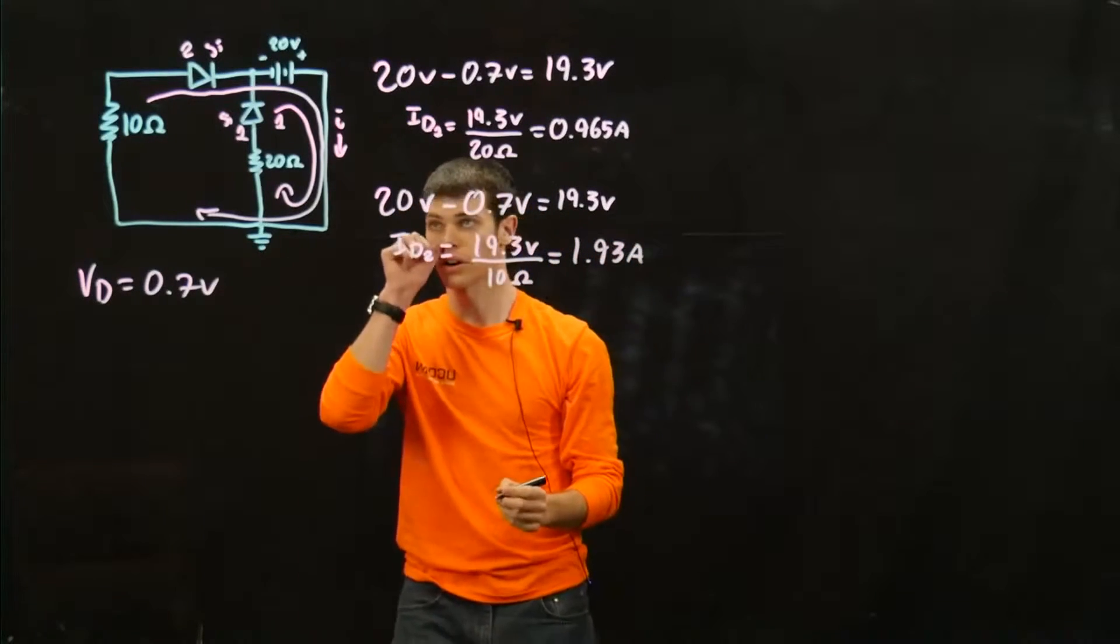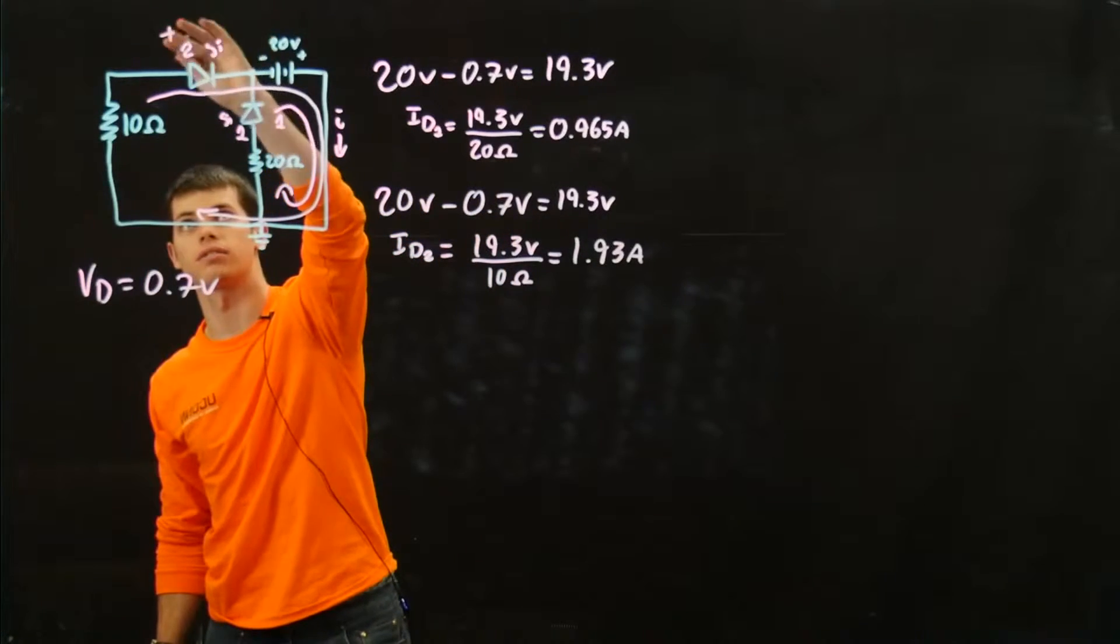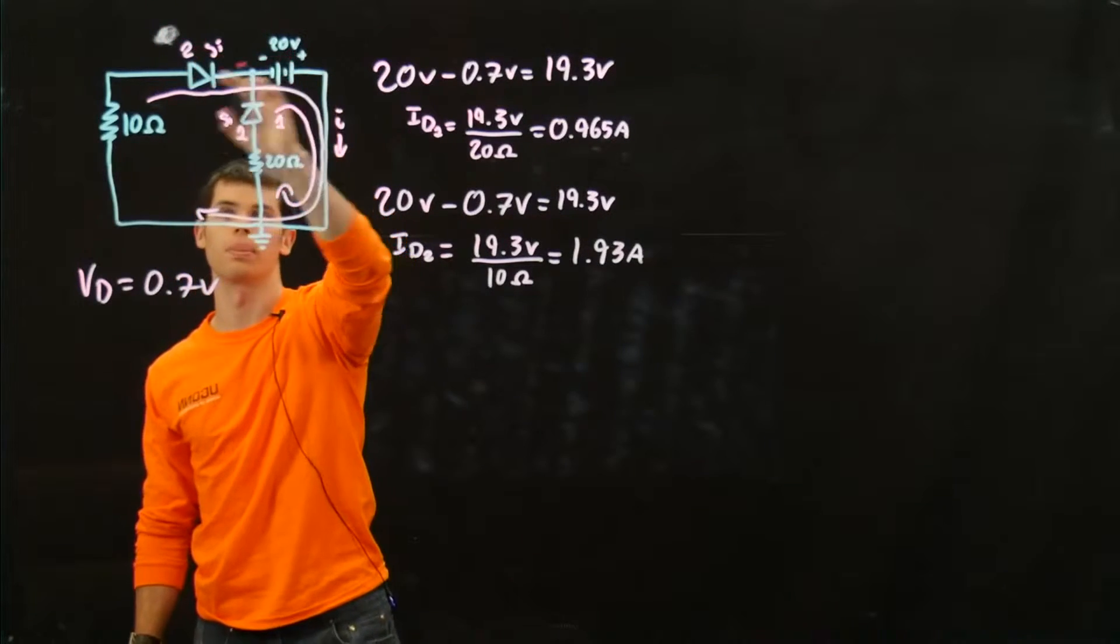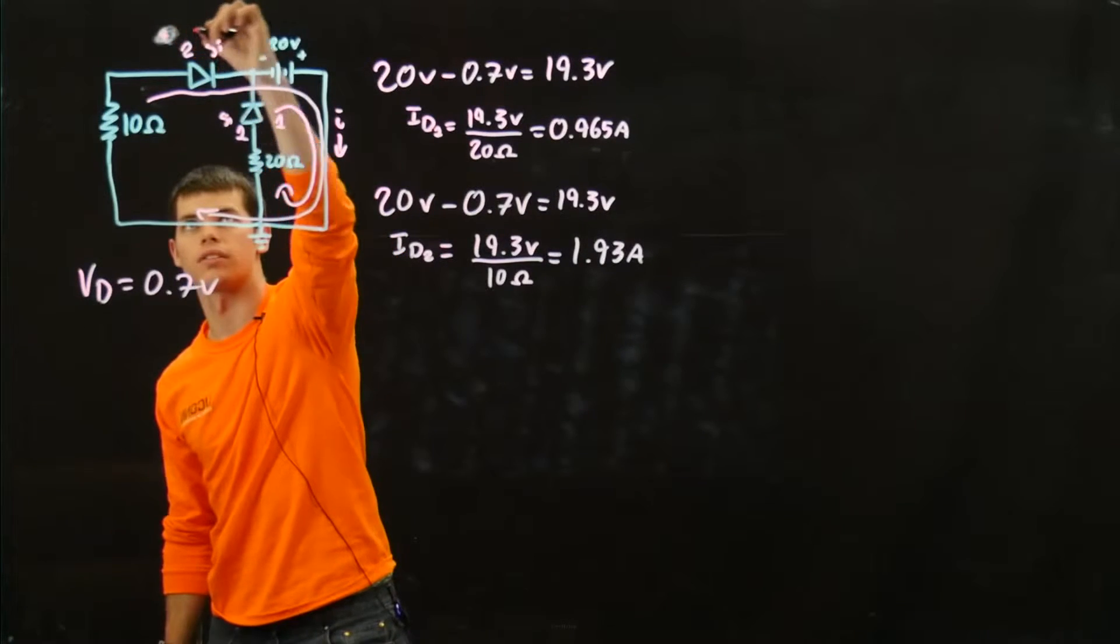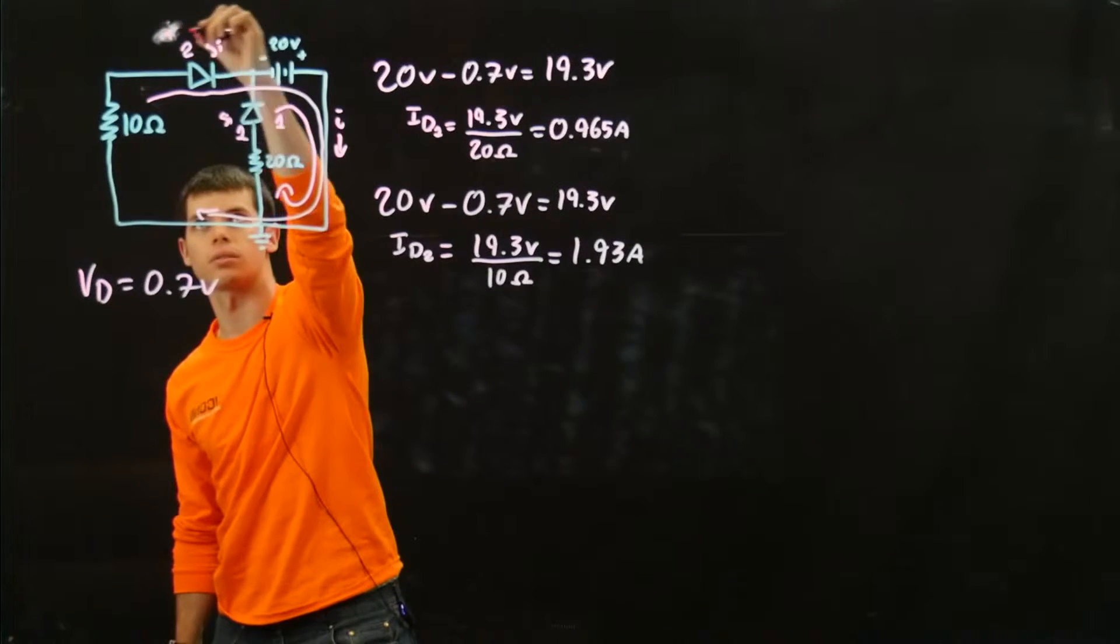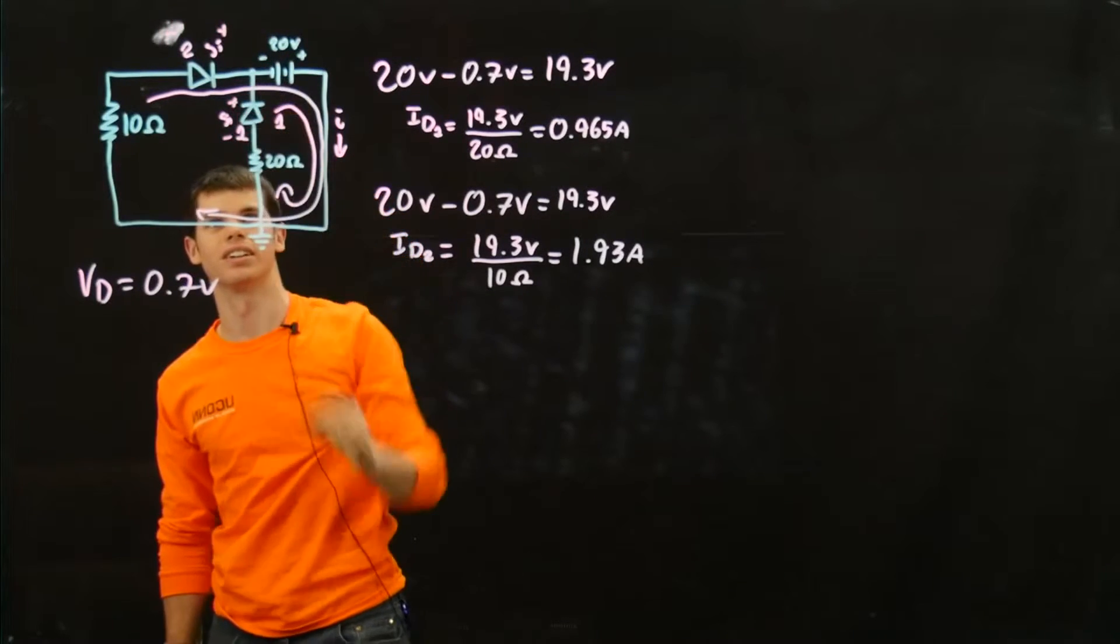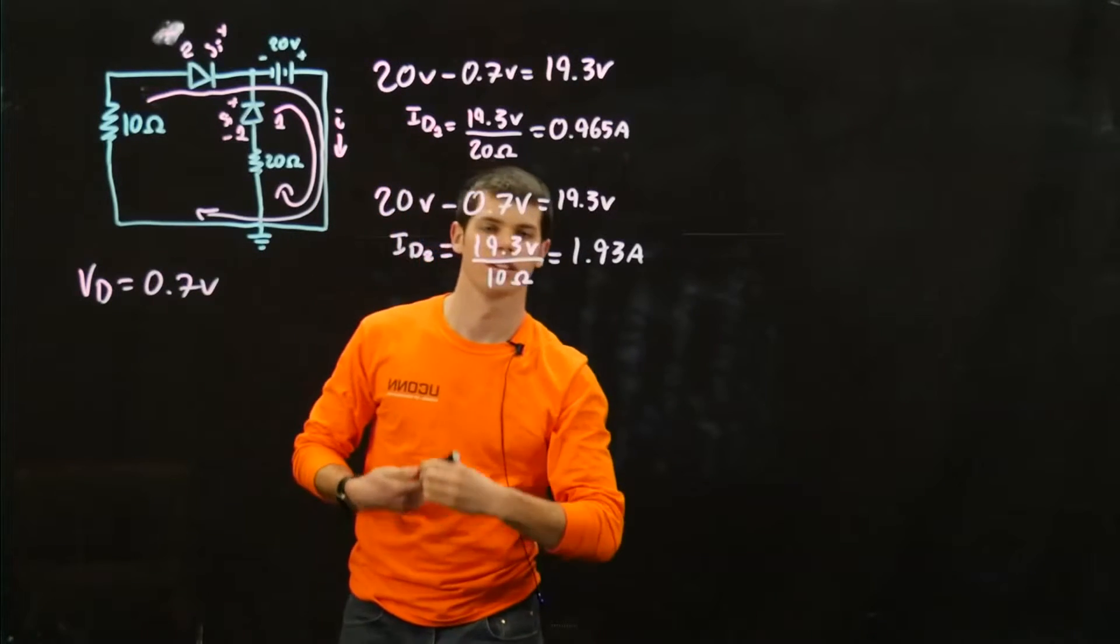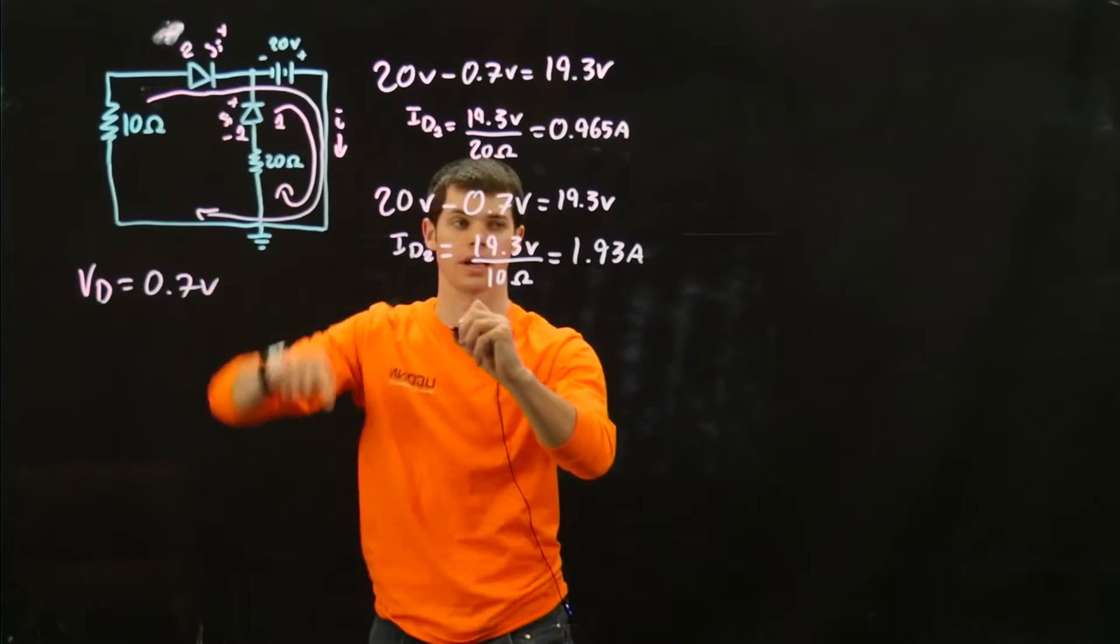Alright, now to find the total current, we're going to look at some directions here. We know that the diode voltage drop is going from positive to negative. So what's happening is that the current is flowing this way - negative to positive. So we're going to have current flowing this way, current flowing this way, they're going to be added together.